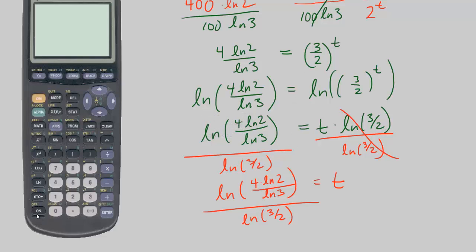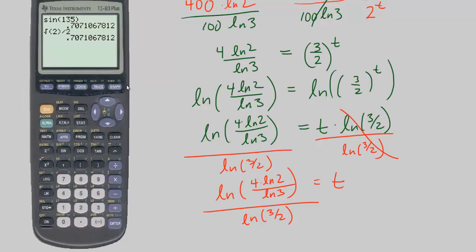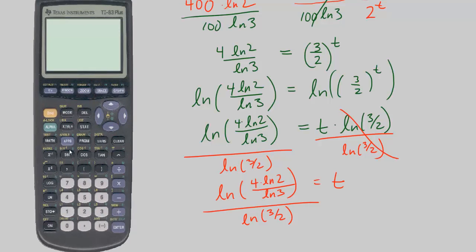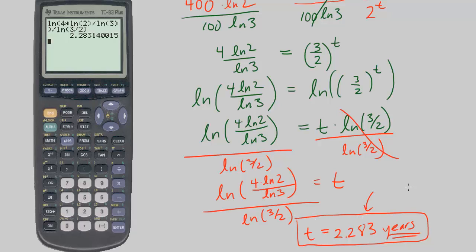So now if you bring out your calculator, you can now plug this in. I know this looks a little different, but it doesn't really matter. ln of 4 times ln of 2 divided by ln of 3, close the numerator, divided by ln of 3 divided by 2. So here, t is now 2.283, and our units are years, because they're telling us the population over the next few years is measured by this equation.